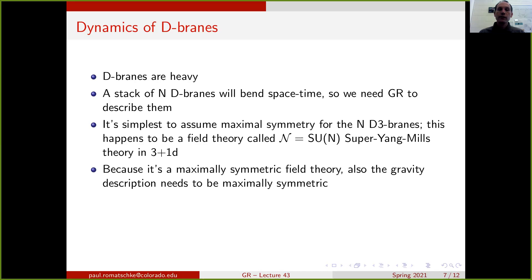Because it's a maximally symmetric field theory, the gravity description that we get from these N D3-branes bending spacetime also has to be maximally symmetric. It turns out that if we embed these D3-branes in 10 dimensions as part of 10-dimensional string theory, then the line element for the gravity description factorizes because of the high degree of symmetry. It factorizes into two pieces. There's an S5 corresponding to a 5-dimensional sphere, and an AdS5 part, which corresponds to anti-de Sitter space in 5 dimensions.